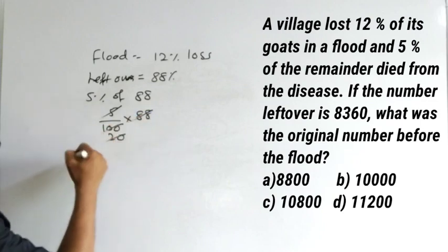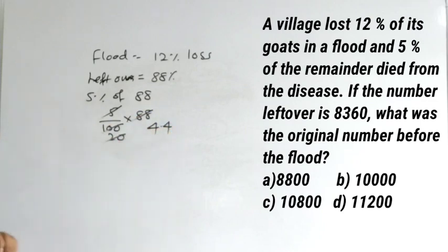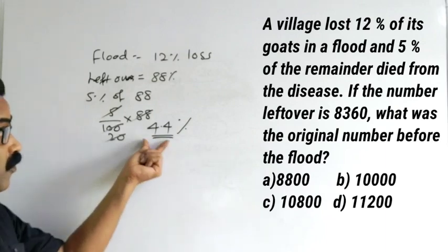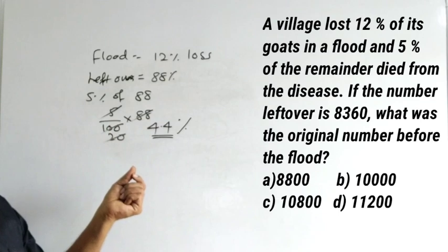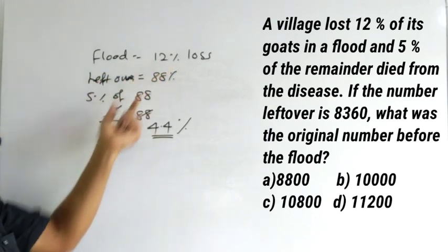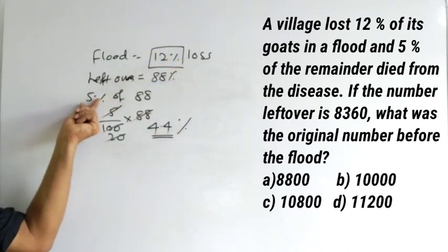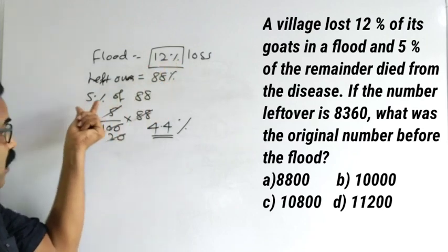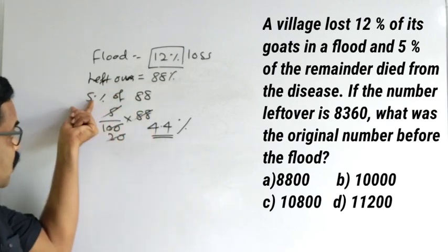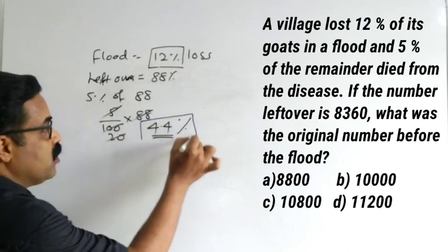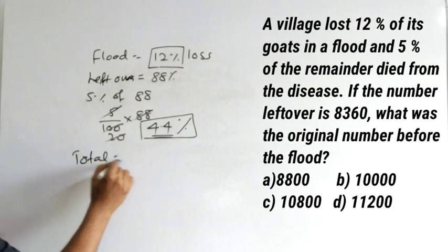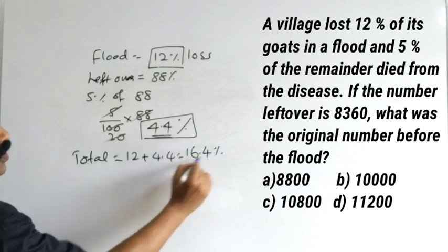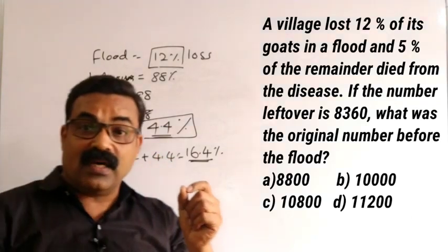Five percentage of 88 is 5 by 100 into 88. You can simplify this — you will get 4.4. That means 4.4 percentage of the original died due to disease. Due to flood, 12 percentage loss. So five percentage of the remaining 88 percentage gives 4.4 percentage. The total loss will be 12 plus 4.4, which equals 16.4 percentage.